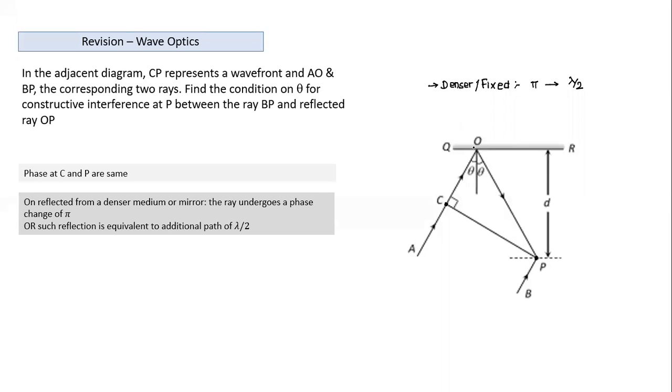Whenever reflection is happening from a denser medium or from a mirror kind of thing, mirror is equivalent of fixed support of a string, here phase will change. Other way we can think of reflection from a denser medium is equivalent to traveling a path equal to lambda by two. We can add at this point a path length of lambda by two. This was a mirror case. If this was air and this was glass, even then glass is denser compared to air, again would have added lambda by two.